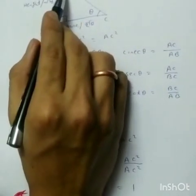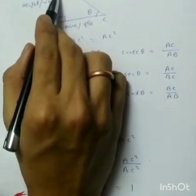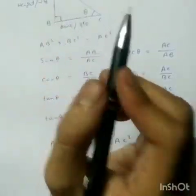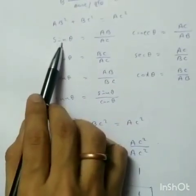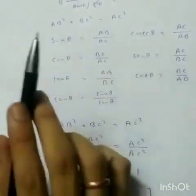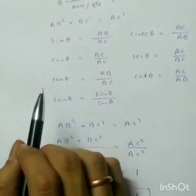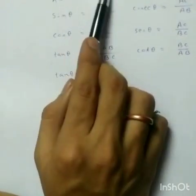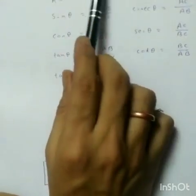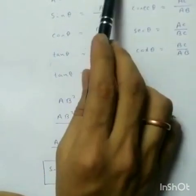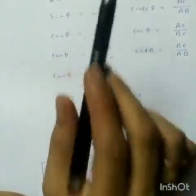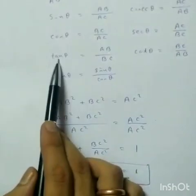So when you take sin theta, cos theta is BC by AC — base by hypotenuse. And tan theta is the same theta from BC by AC, meaning BC by athibhuj — base by hypotenuse. Tan theta is also expressed as base by hypotenuse.